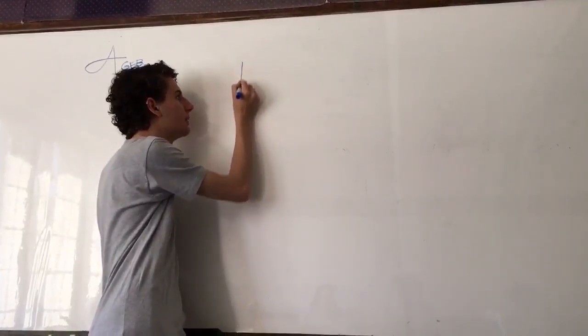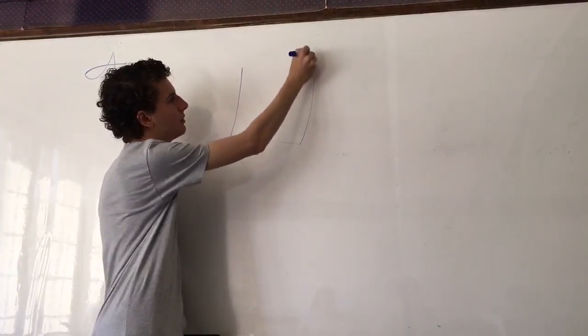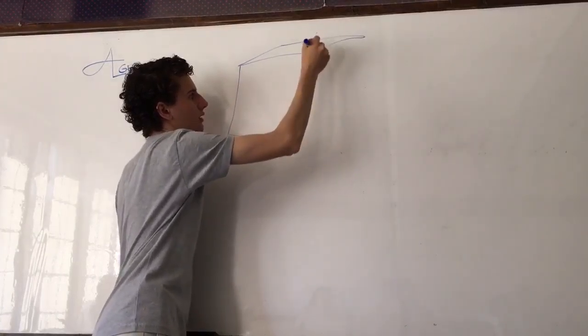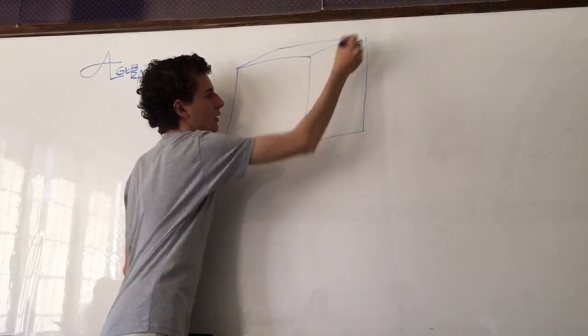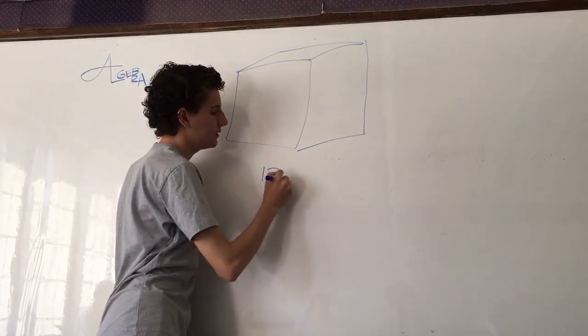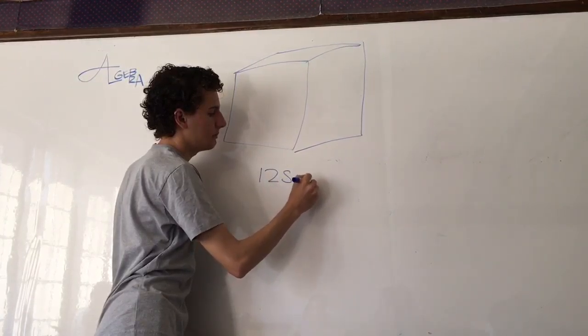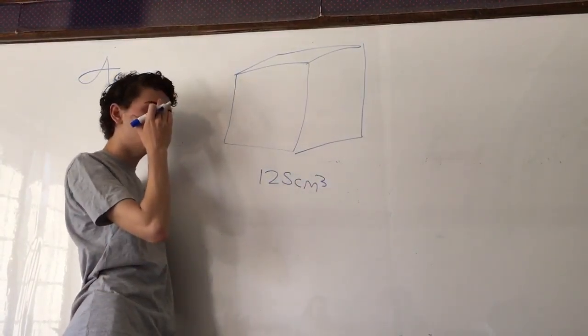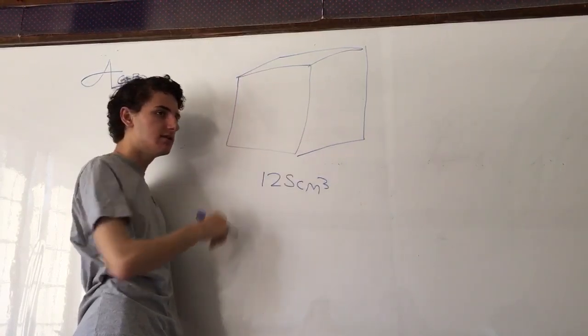All right, so in this problem we've got a big cube. The cube has a volume of 125 centimeters cubed. So we have to find the area of one of the sides of the cube.